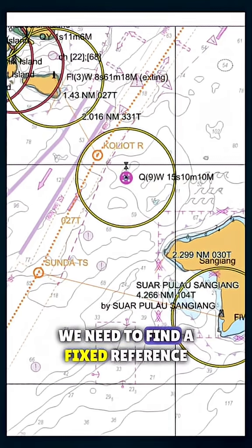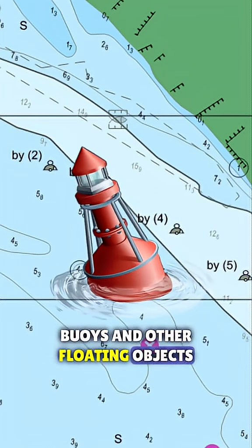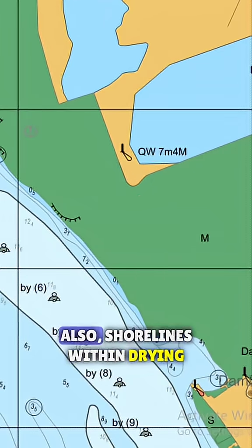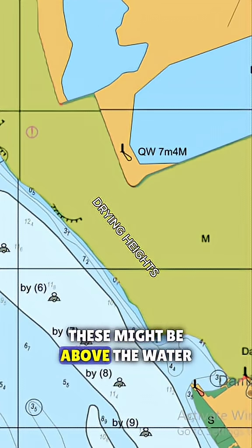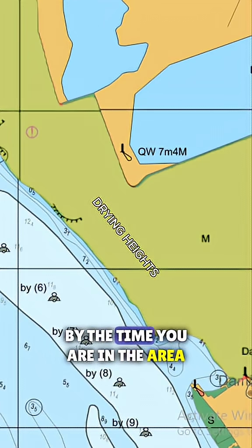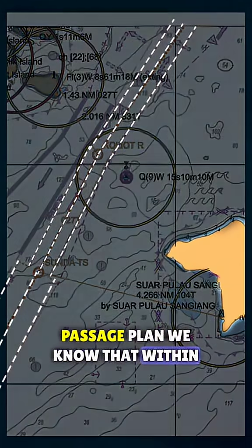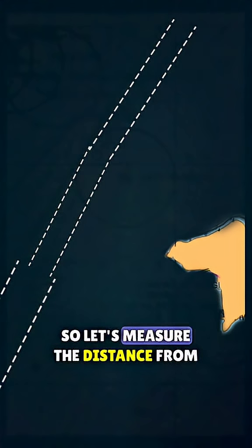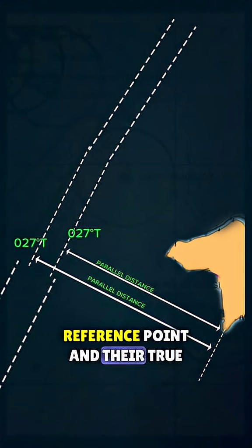First, in a chart, we need to find a fixed reference point that is easily recognizable on radar. Buoys and other floating objects are not included because they can drift away any time. Also, shorelines within drying heights are not reliable because these might be above the water by the time you are in the area. Let's choose this. Now, in our passage plan, we know that within these cross-track limits, our ship is safe. So let's measure the distance from both these lines from our reference point and their true course.